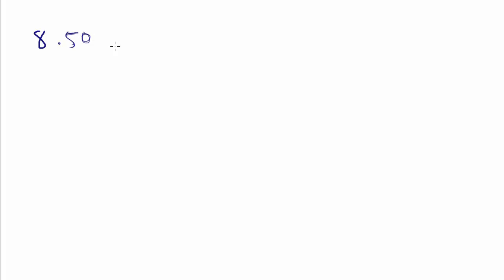So what happens when we get a number like this? Say I get 8.50 and I want to convert that from a decimal number into a binary number. So we're going to convert this decimal number, 8.50, to a binary number.